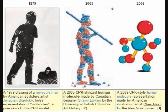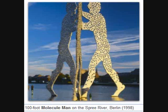Borofsky went on, in the decades to follow, to build four outdoor sculptures of these molecule men located around the world. For example, Borofsky's 1998 100-foot-tall molecule man sculpture is situated on the Spree River in Berlin.